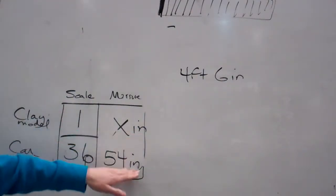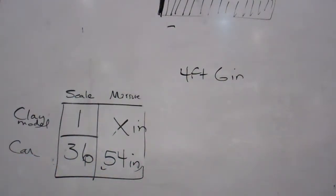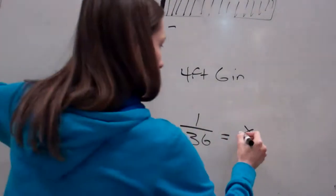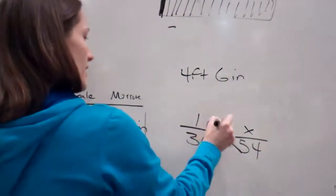Are you saying how we know to do inches or feet? No, I was confused. Okay. So, now we're going to go 1 over 36 equals x over 54. Work it the same way.